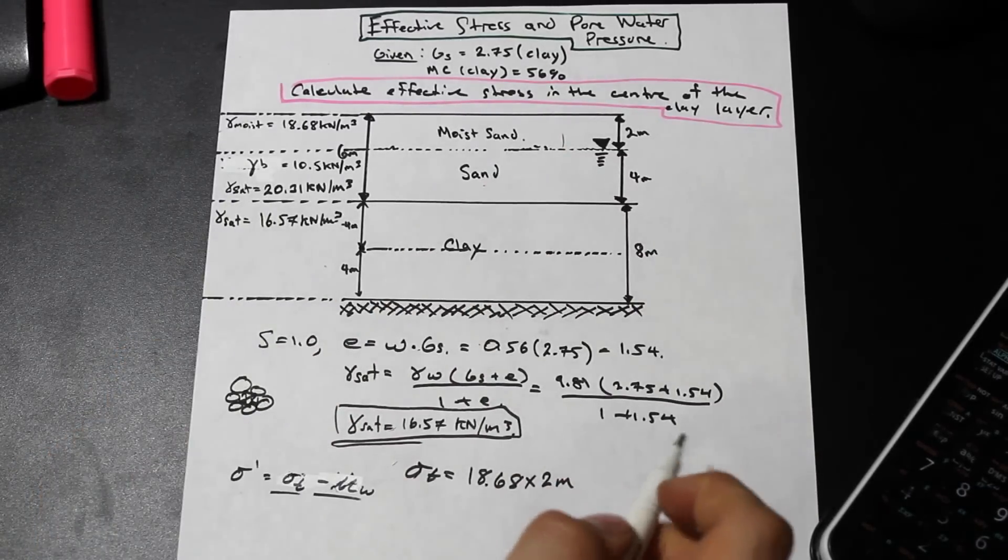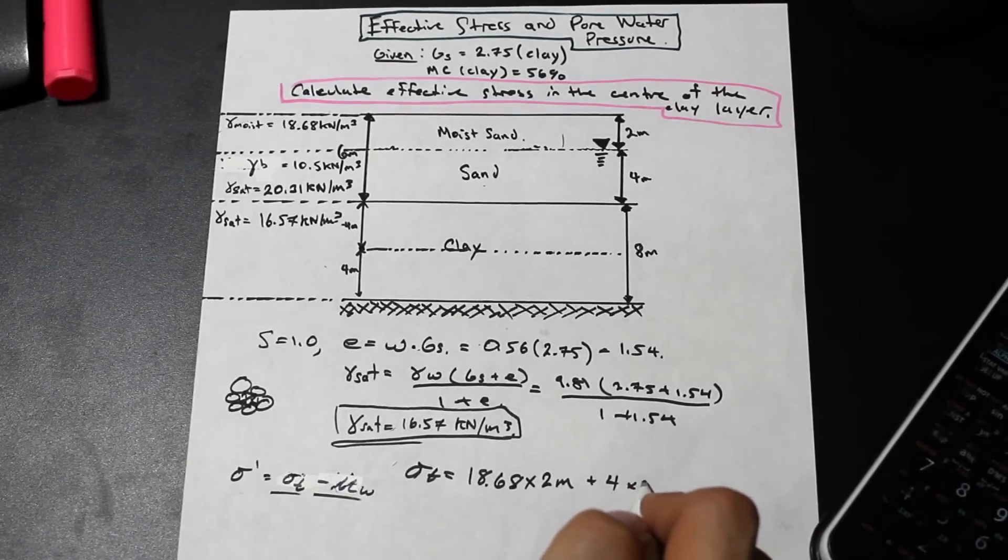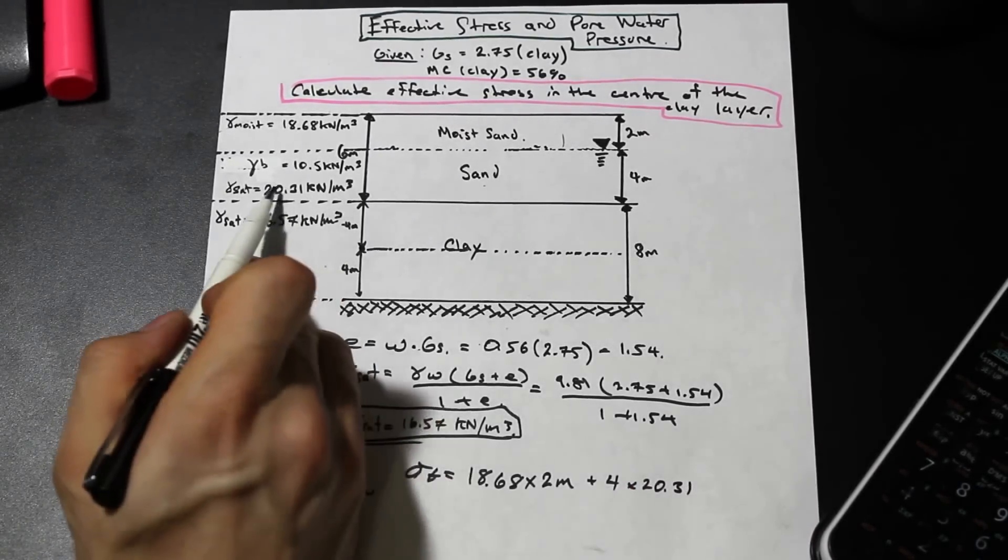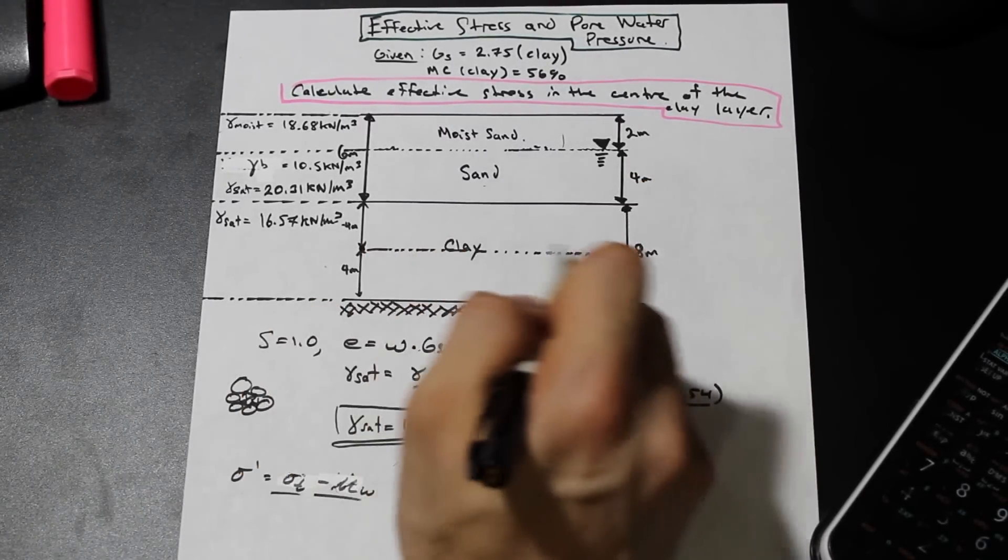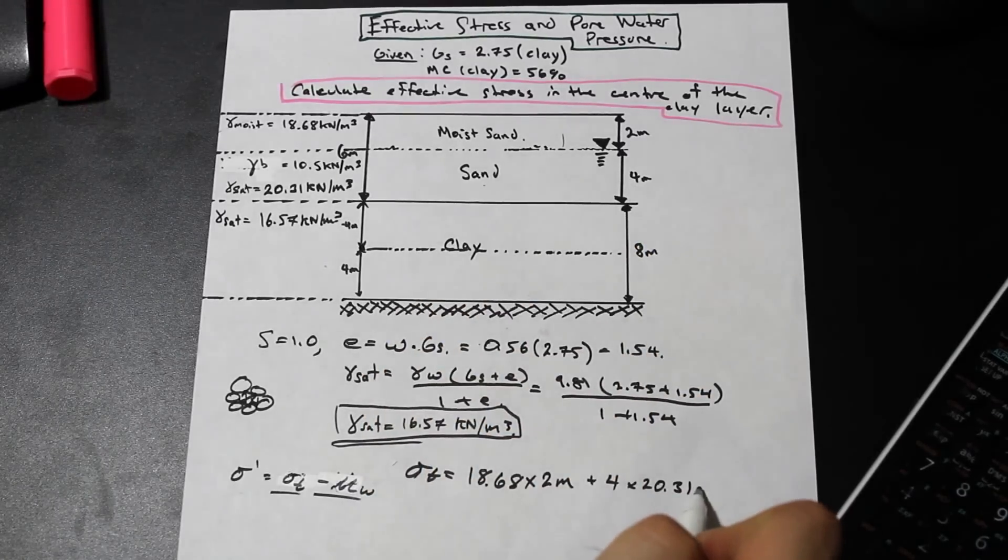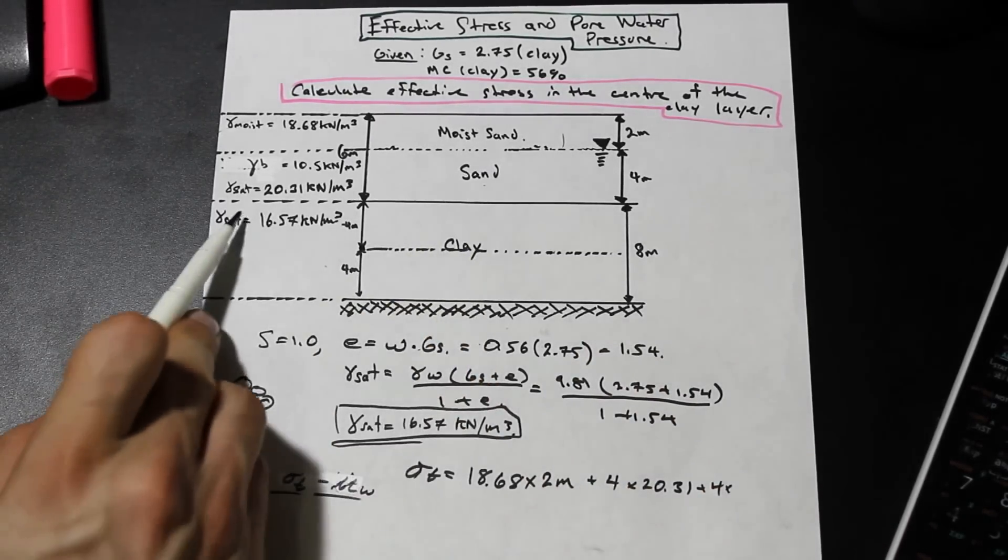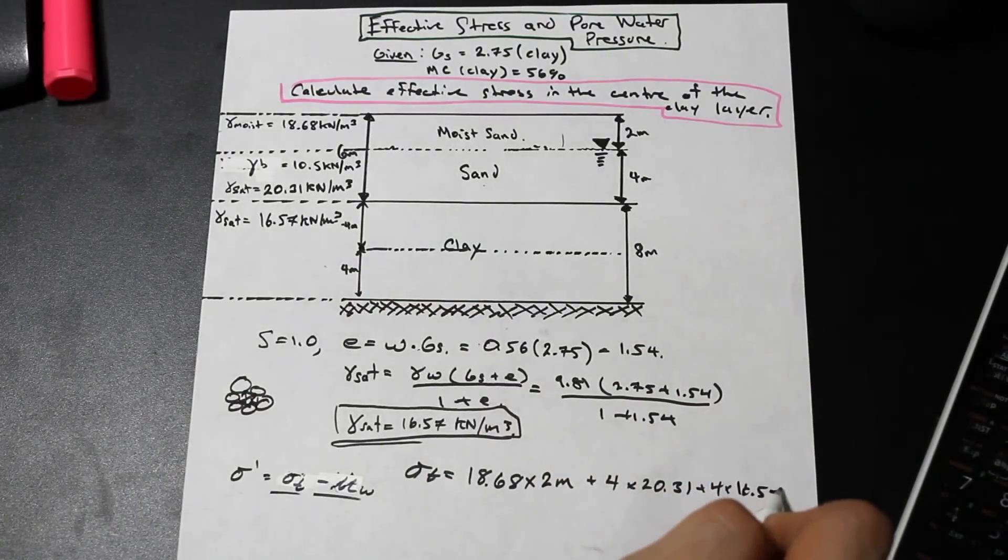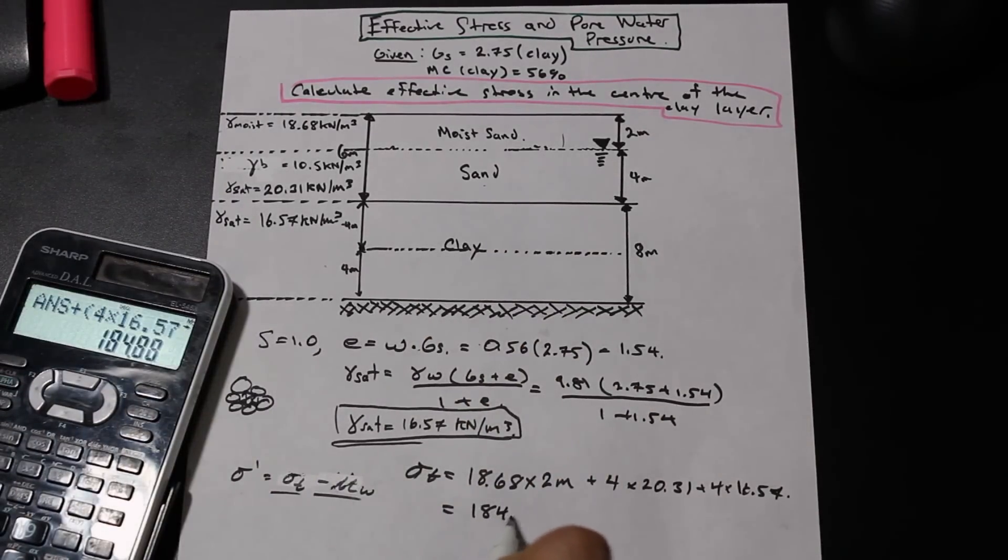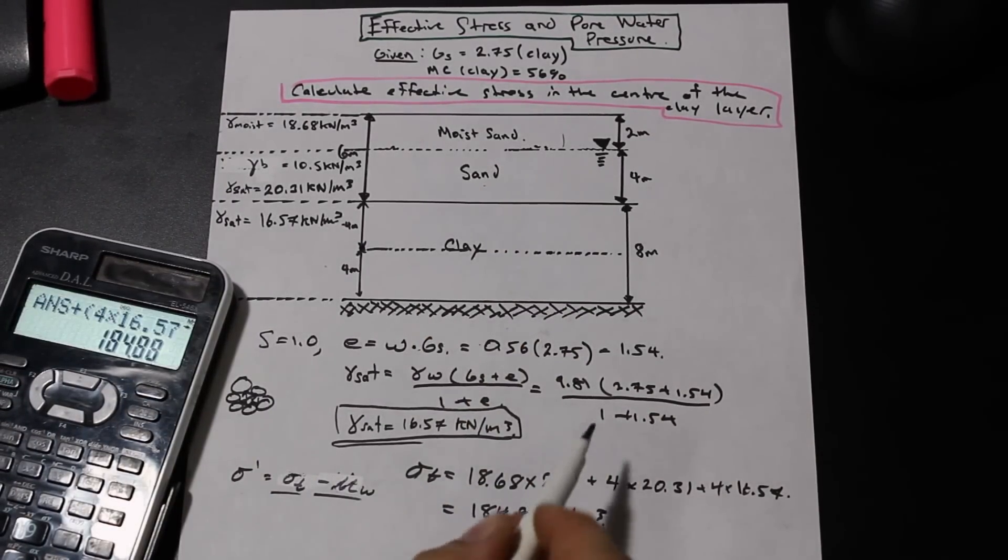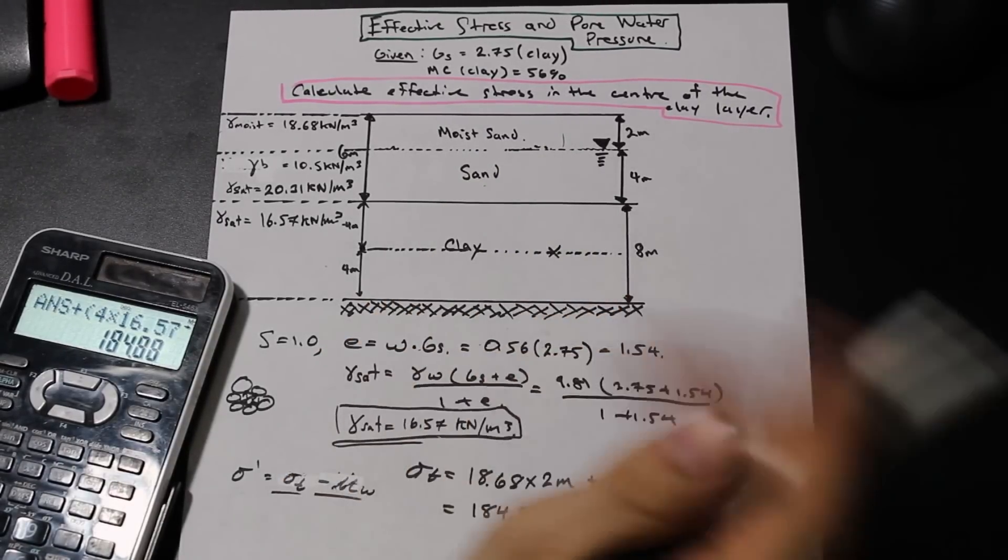And we're going to use gamma saturated for that. So we're going to add the 4 meter depth of the sand times the saturated unit weight, because as we can see, it's underwater now. This denotes the water table level. And finally, we have the halfway to the clay layer, because they want us to the middle, so 4 meters in. And we're going to have a 4 meter layer. And that's going to be multiplied by the saturated unit weight of clay, which is 16.57, which we calculated. And if we add that up, we're going to get 184.88. So this is the total stress at this point right here, or any point along here, due to both the water and the sand and the clay above.